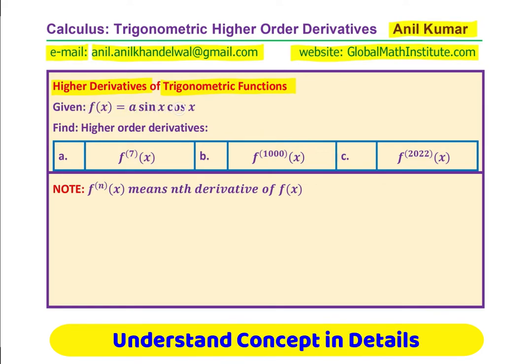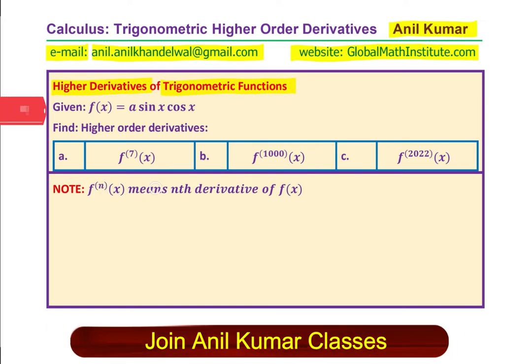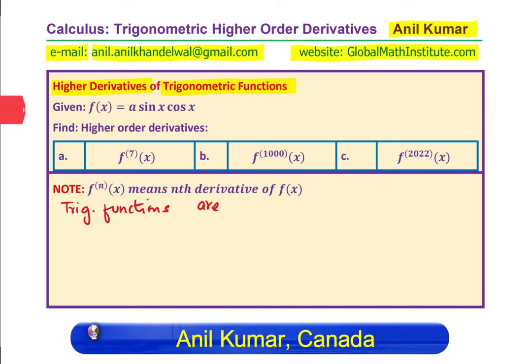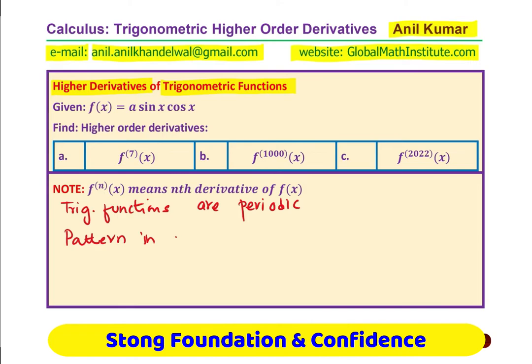We are given a function A sin x cos x. We want to find higher order derivatives, seventh derivative, thousandth derivative, twenty-twenty-two derivative. The nomenclature f^(n)(x) means nth derivative of f(x). Important thing here is to understand that trigonometric functions are periodic. And therefore, what do we expect? We expect a pattern in higher order derivatives.